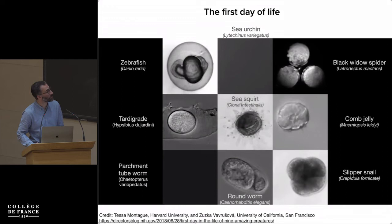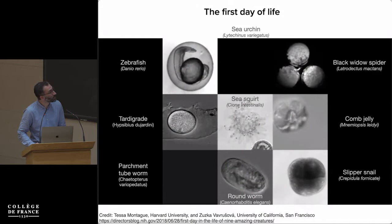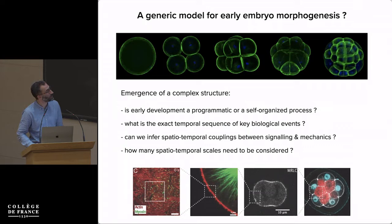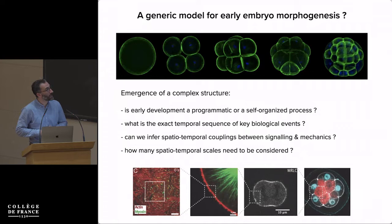But that's our goal, and I'll try to convince you that maybe it might be possible. What is common to all these embryos at the very beginning is the shape of cells, and that's what I'll focus on today. If we look at very early embryos — the very first divisions — they look like beautiful, already complex structures with broken symmetries and axes which appear. A big question in the field is: is early development programmatic or a self-organized process? I tend to see it as a self-organized process, in the sense that it's through the interaction of cells that an embryo develops.